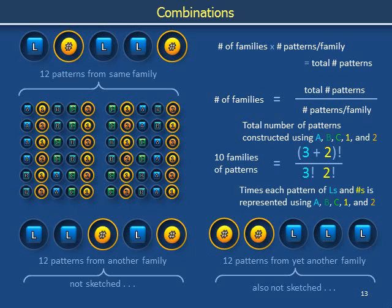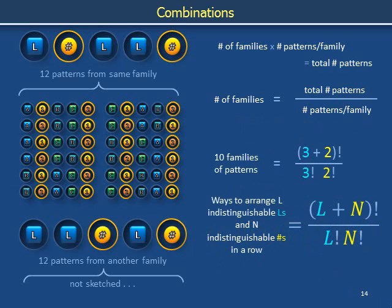More generally, (L+N) factorial divided by L factorial N factorial is the number of ways to arrange L indistinguishable letters and N indistinguishable numbers in a row.